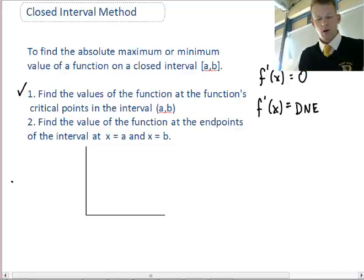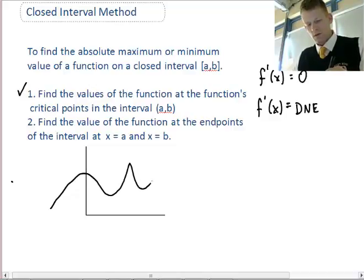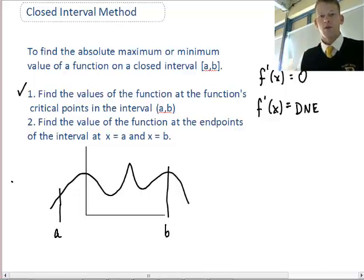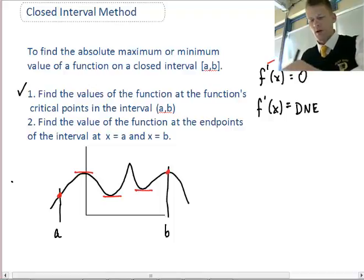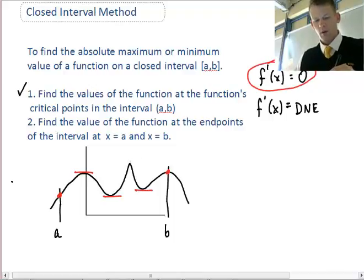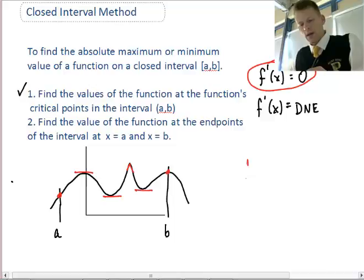If I draw a generic function with an interval from A to B, we have two types of critical points within the interval. The places to check for maximum or minimum value are either at the endpoints, because those could be where we have highest and lowest values, or at the critical points where the derivative equals 0 or where the derivative at this cusp doesn't exist.